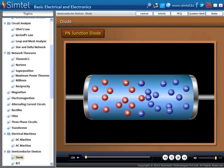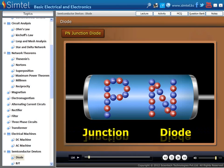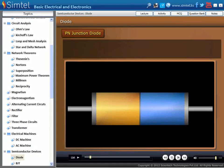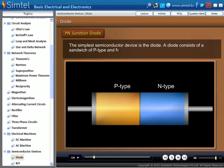Let's begin with P-N junction. P-N junction diode consists of a sandwich of P-type and N-type semiconductors.